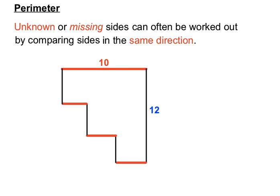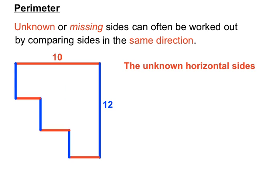Looking at the vertical lines: if we have a 12 there, we can compare it to all the other vertical lines, shown in blue. We might not know the individual sizes of the smaller lines, but we do know the total of the vertical lines and the total of the horizontal lines. The unknown horizontal lines will add up to 10.